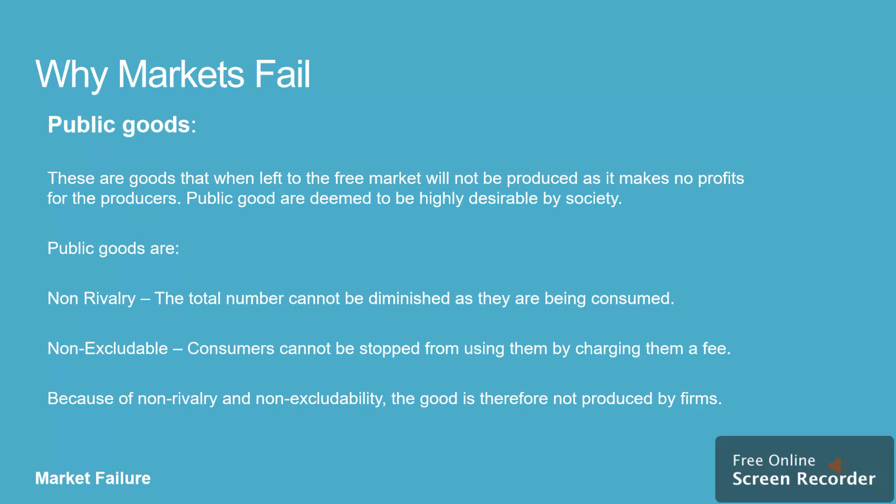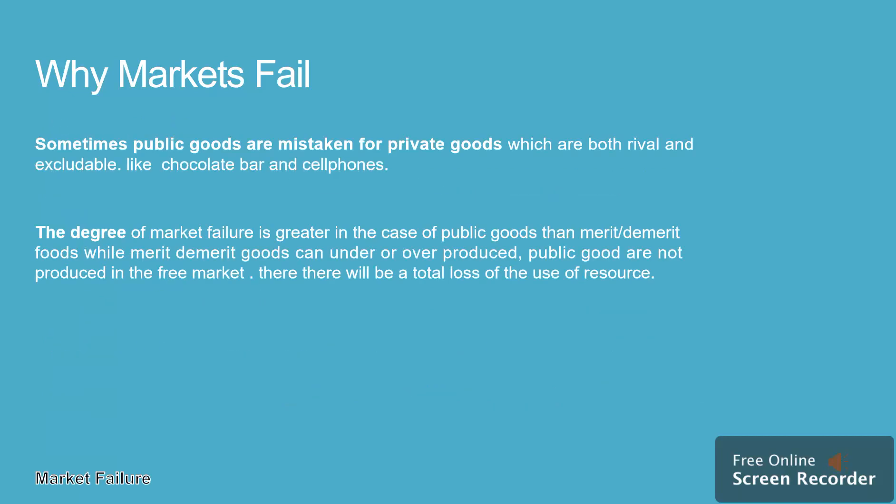Public goods are goods that, when left to the free market, will not be produced as they make no profits for producers. Public goods are deemed to be highly desirable by society. They have two key characteristics: non-rivalry, meaning the total amount cannot be diminished as they are consumed, and non-excludability, meaning consumers cannot be stopped from using them by charging a fee. Because of these traits, public goods are not produced by firms. They are sometimes mistaken for private goods, which are both rival and excludable, like chocolate bars and cell phones.